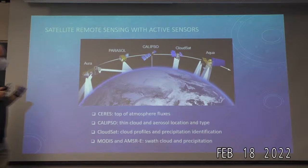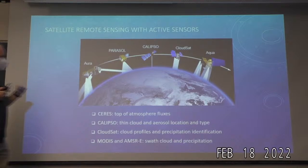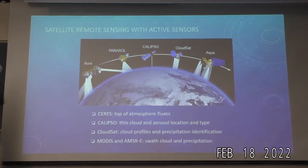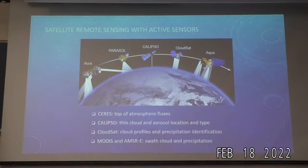A lot of my research focuses on using the information from these satellites to understand climate processes and improve climate projections. Key instruments include CERES, which measures top-of-atmosphere radiative fluxes; CALIPSO, a lidar that measures thin cloud and aerosol properties; CloudSat, a radar measuring cloud profiles and precipitation; and wide-swath instruments like MODIS, a visible and infrared radiometer, and AMSR-E, a microwave radiometer measuring cloud properties and precipitation.